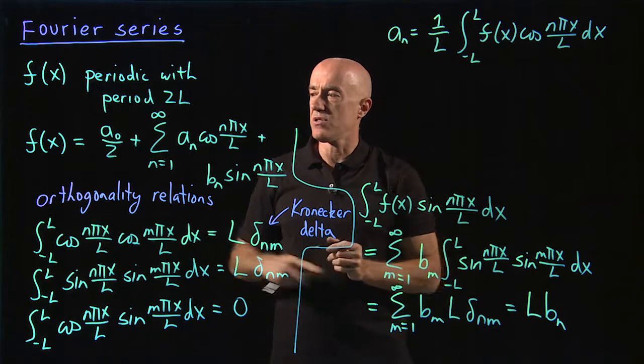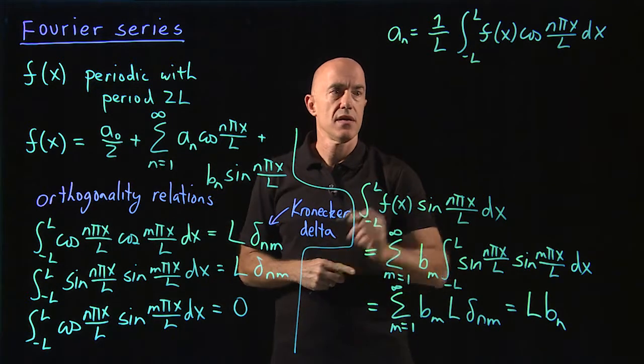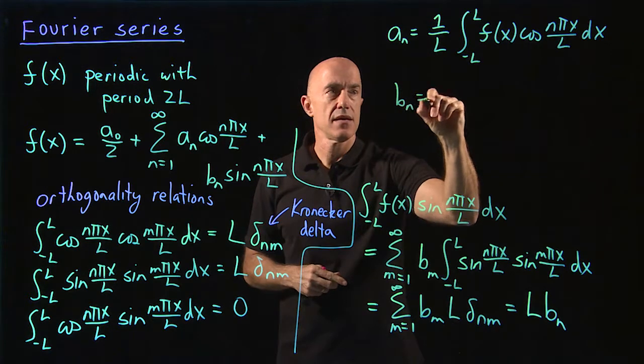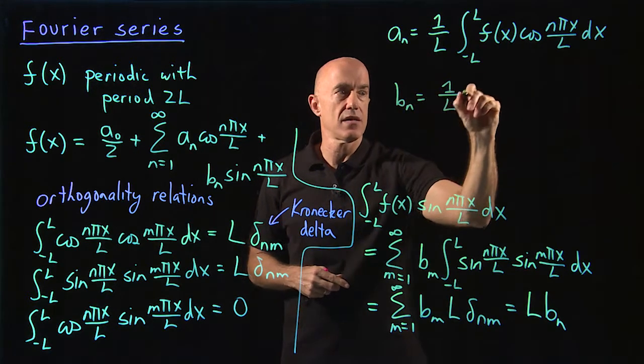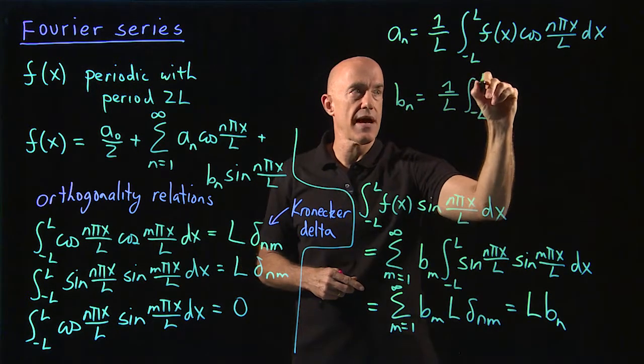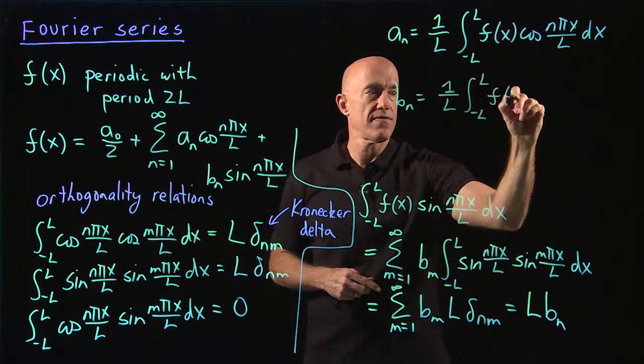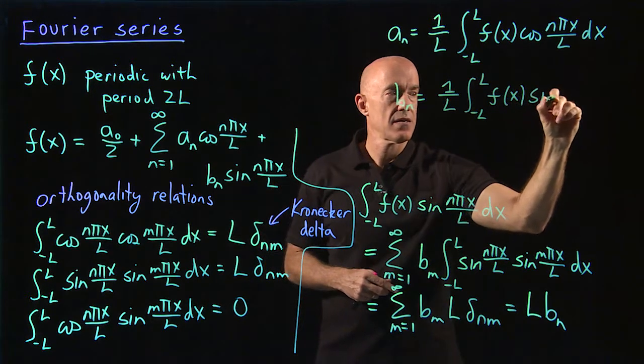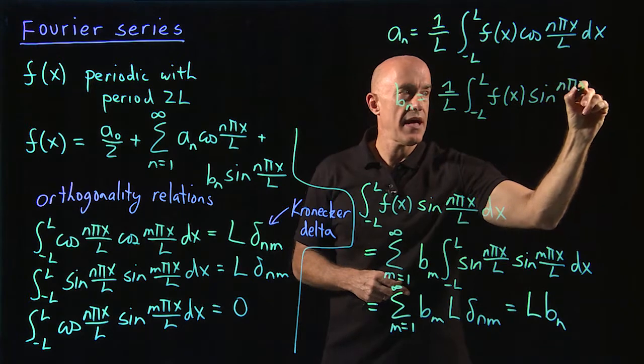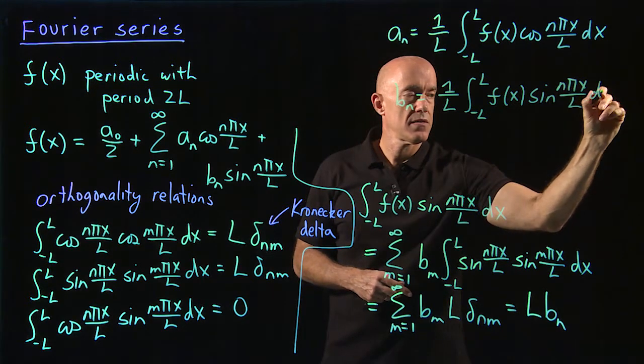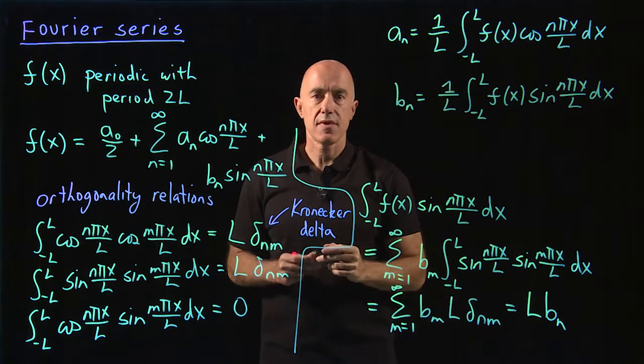The other one then would be b sub n equals 1 over l times the integral from minus l to l of f of x sin n pi x over l dx.